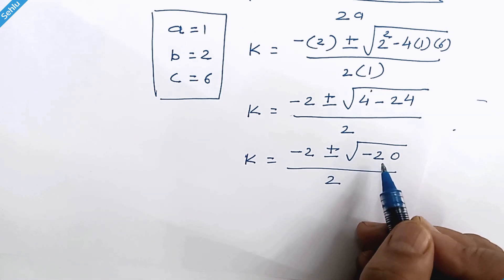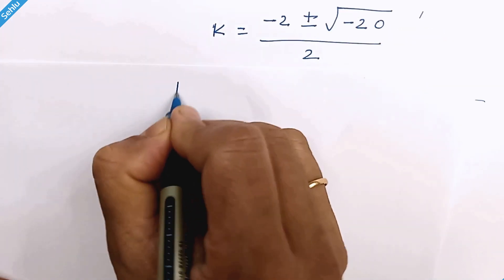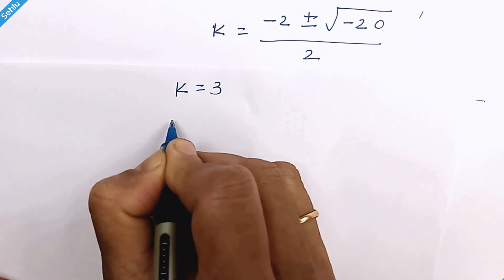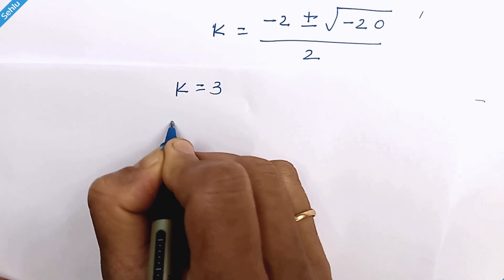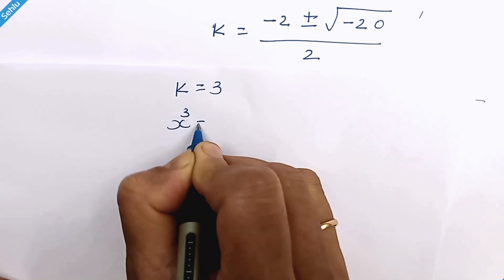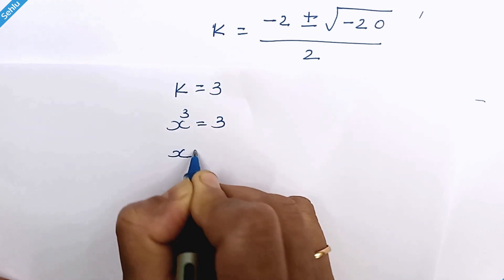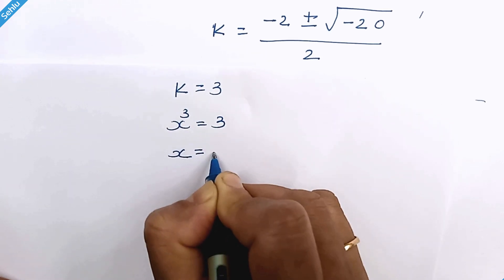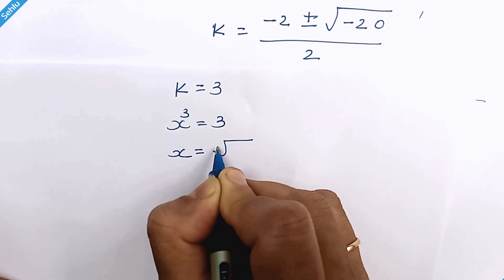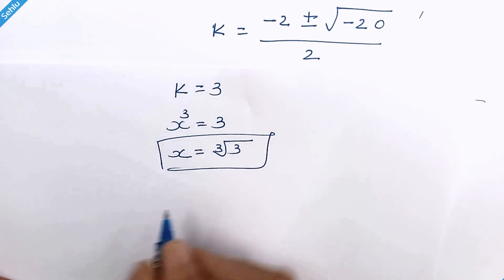What we have is k is equal to 3, and since we took k in place of x cube, x cube is equal to 3. So x is equal to cube root of 3, and this is our answer.